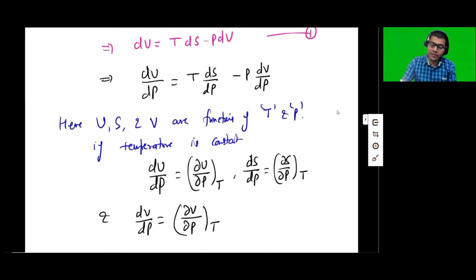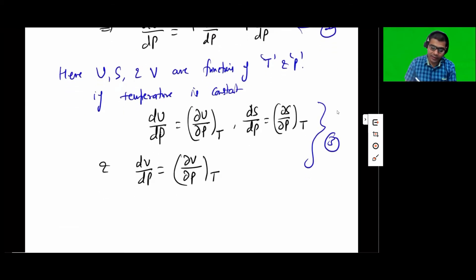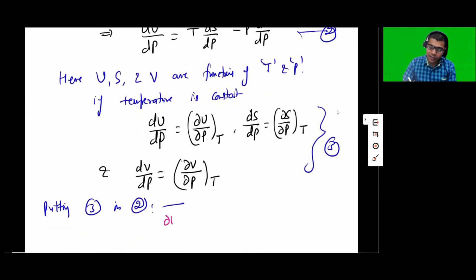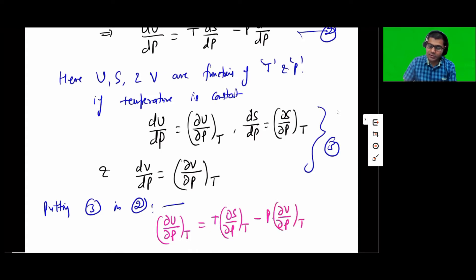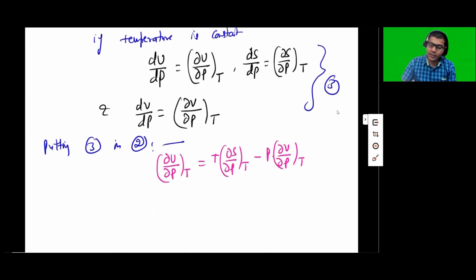When I substitute all this information, putting equations 3 and 2 together, I get the following: del U over del P at constant T is equal to T times del S over del P at constant T, minus P times del V over del P at constant T. So that's what we get as equation 4.